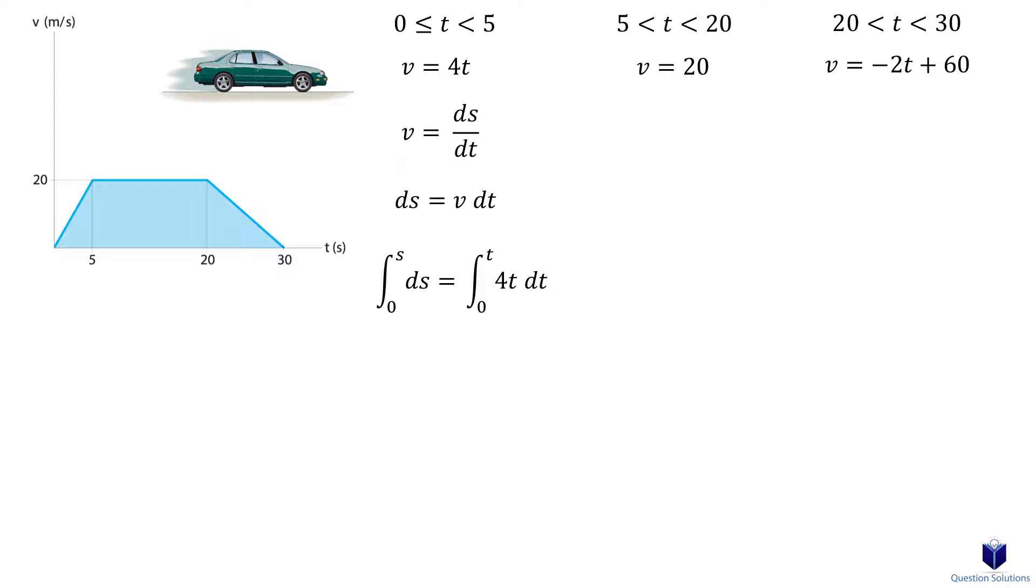In other words, the car starts at a displacement of 0 meters at a time of 0 seconds. We now have the first equation for the first segment. Let's figure out the displacement at 5 seconds, which is 50 meters. We need to use this value when we do the integral for the second segment as the initial condition.